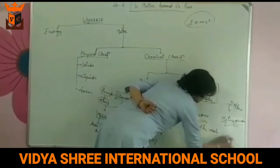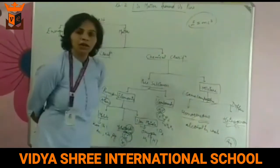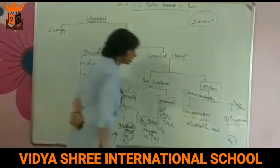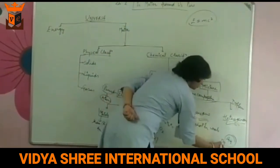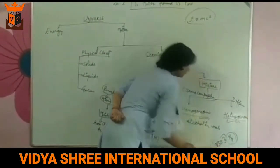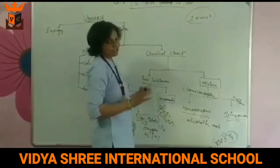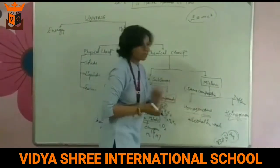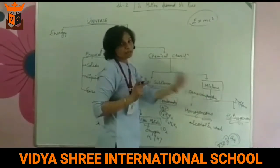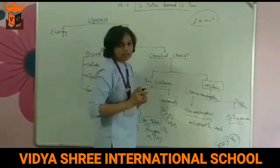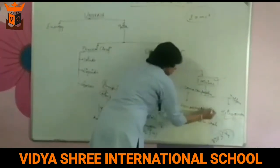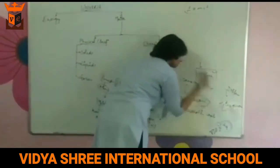Air — is air a mixture or a compound? It is a mixture, because in air, CO₂, O₂, hydrogen, and other gases have compositions that are not fixed. If you talk about a forest, oxygen can be more; if you talk about an industrial area, nitrogen gas can be more. So air is a homogeneous mixture.